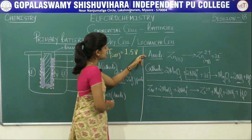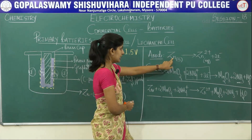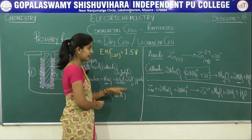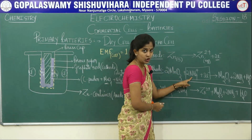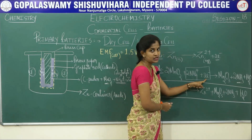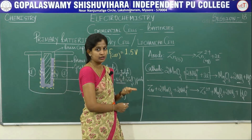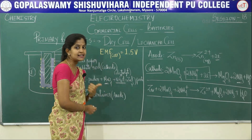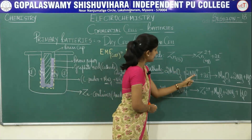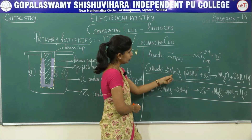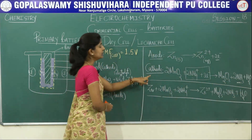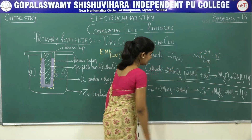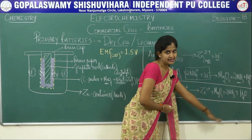At the anode, zinc undergoes oxidation giving two electrons. Those electrons move to the graphite (carbon) rod. The ammonium ions of the electrolyte accept the two electrons, producing ammonia and hydrogen gas. Hydrogen gas is then oxidized by MnO2 to H2O. By cancelling the two electrons on both sides, this gives the overall reaction of the dry cell.